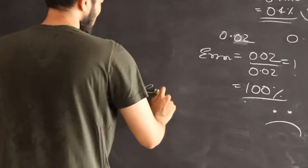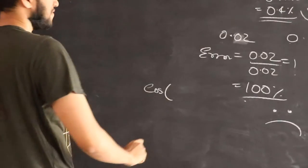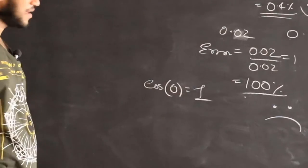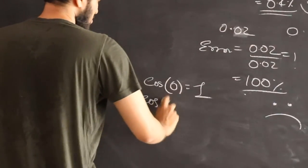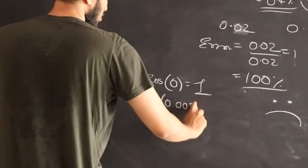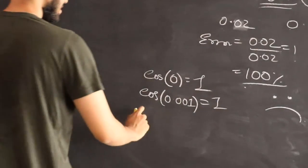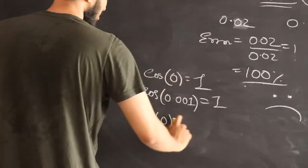See, cos of 0 is 1. You can do that. Similarly, if I ask you what is cos of 0.001, you can approximate and say it's 1. So, sin of 0 is 0.